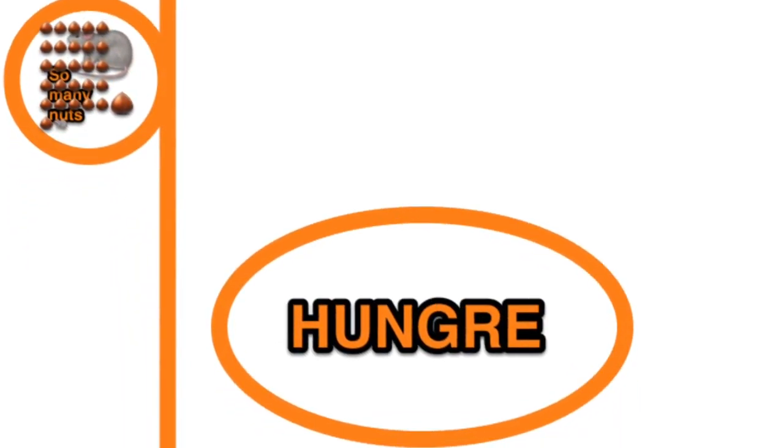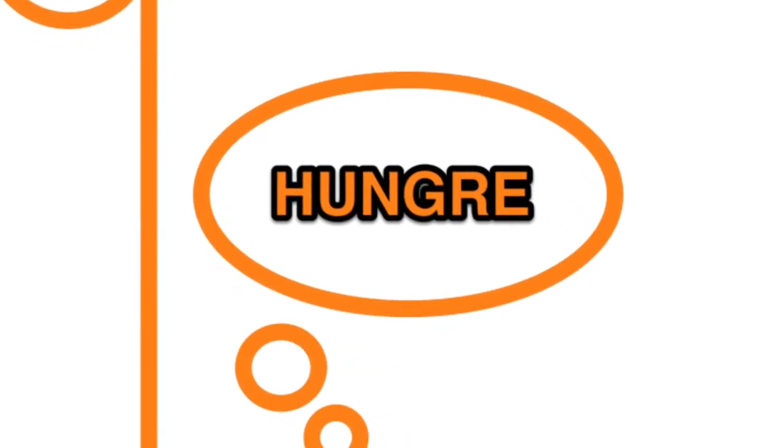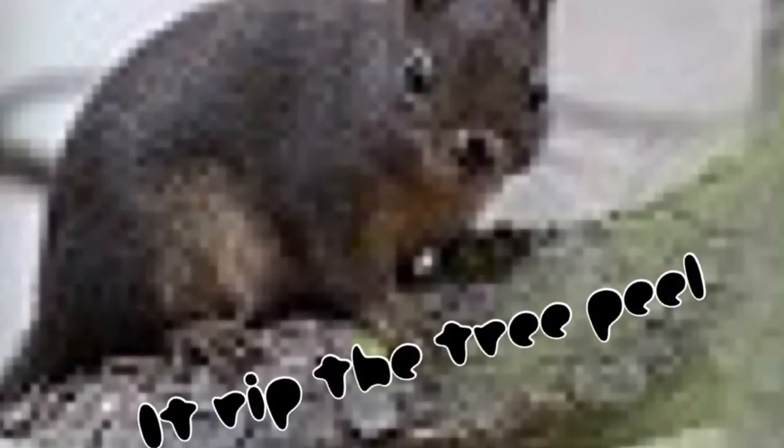Sometimes squirrels bring so many nuts and other animals can't eat nuts. When they make their nest, they rip the tree bark and they distract the tree from growing.